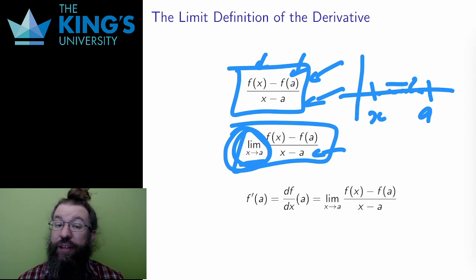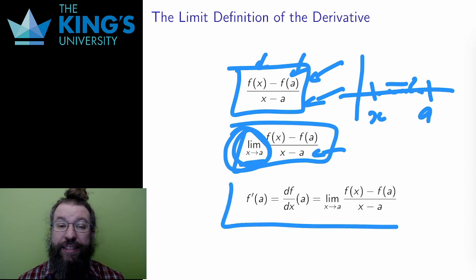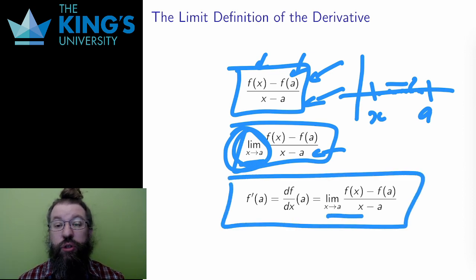This is the definition of the derivative, the limit of the slope of secant lines as the second point gets closer and closer to the first. This limit measures the rate of change of the function.